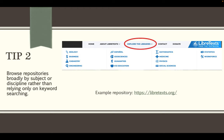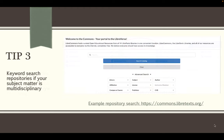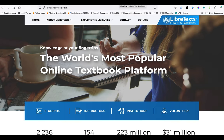Along with that advice, tip three suggests that you should keyword search repositories if your subject matter is multi-disciplinary especially. Let's look at a few examples where subject browsing and keyword searching might provide different but complementary results, starting in one large OER repository, which is on the LibreText site.